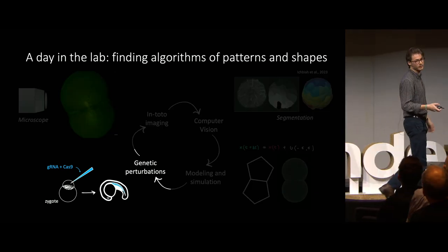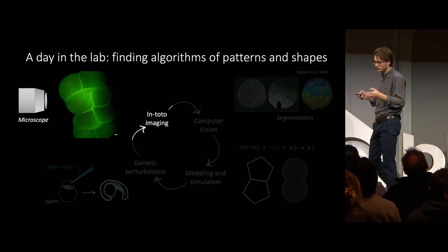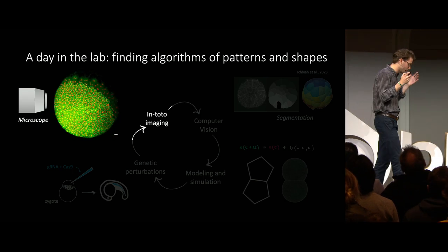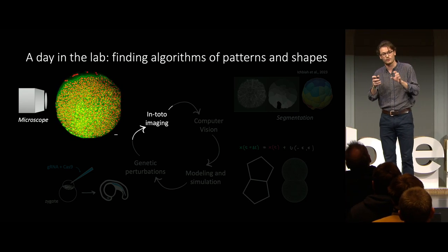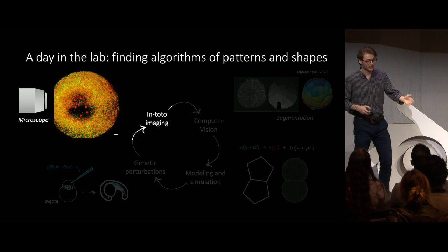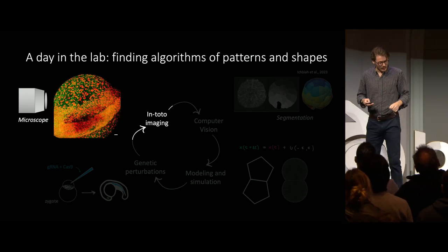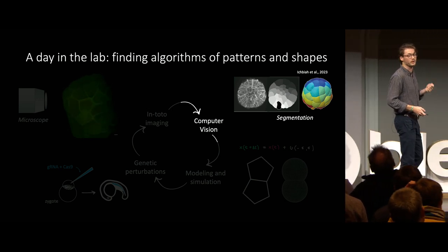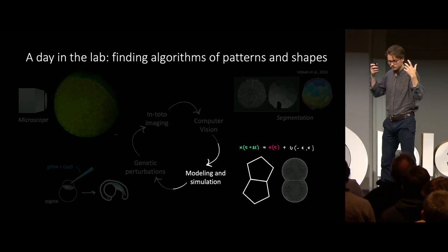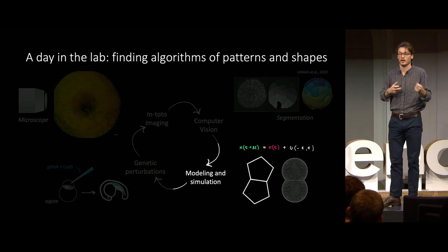First, we can genetically perturb living embryos — we can turn on and off some components and properties of the cells. Then we can visualize those genetic perturbations using a microscopy technique called in-toto imaging, which allows us to image and track every single cell movement in a living embryo in 3D and over time. Then we can digitize those time-lapse 3D images using computer vision and meshing algorithms, and finally use mathematical modeling to identify the general principles that can recreate life on computers.